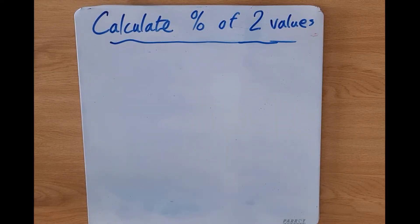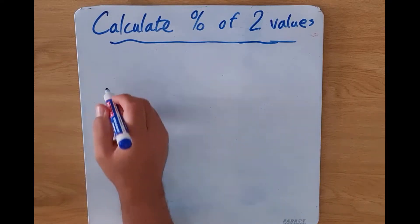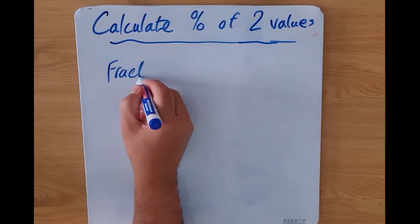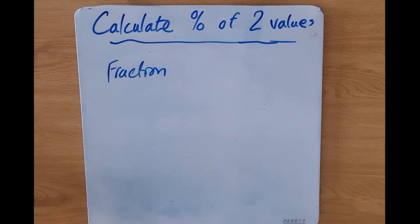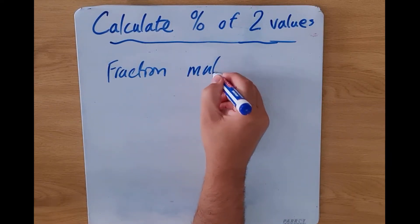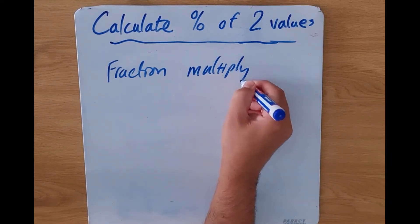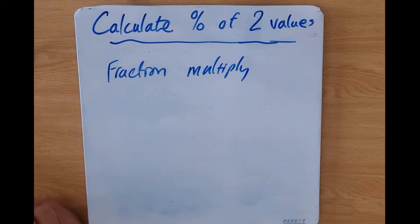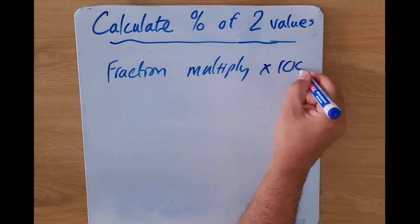So to calculate the percentage when you are given two values, we need to create a fraction and then do something with that fraction. We need to then multiply that fraction by 100.